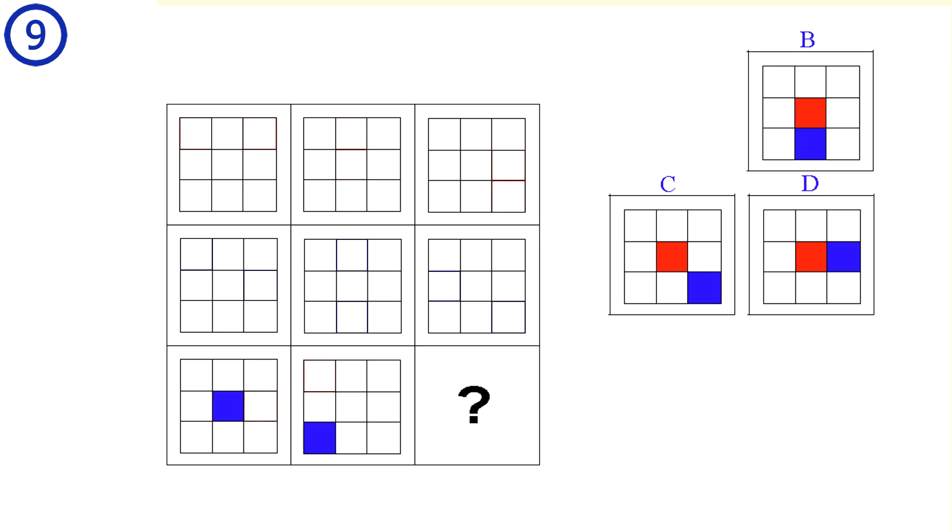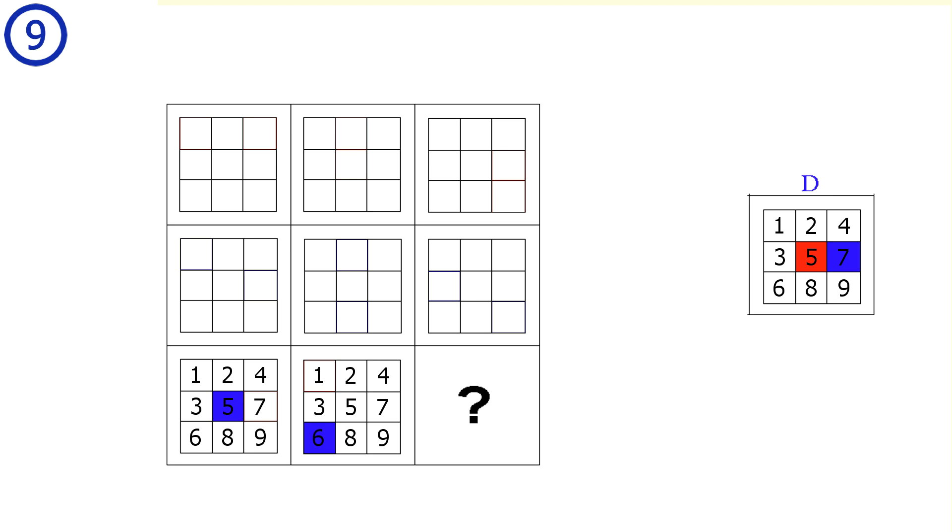Next, let's focus on the blue squares. Here we have the numbers which indicate how the blue squares move. In the first picture, the blue square is in position 5, then it moves to position 6, and then position 7. Out of the 3 answers left, only answer D has a blue square in position 7. Answer D is the correct solution.